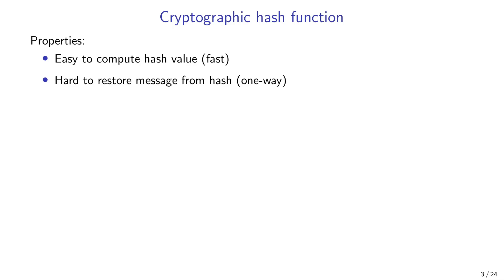Then it should be one-way, meaning that it is hard to restore the message from its hash value. So if I gave you a hash value, there should be no inverse function that you could apply to find the message that was hashed to produce this hash value.